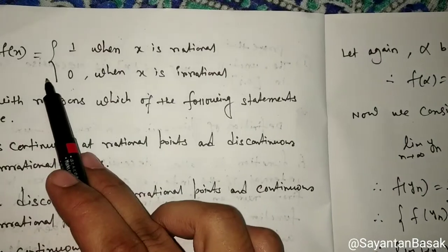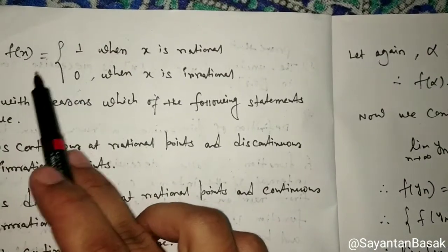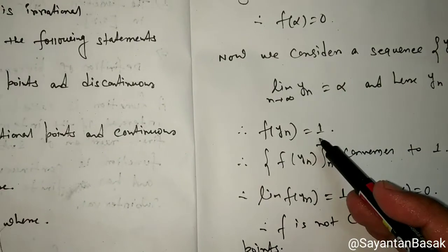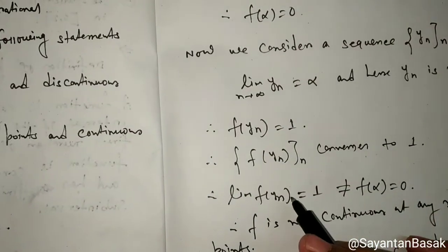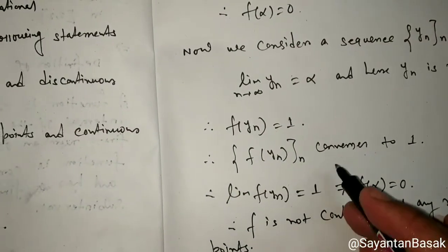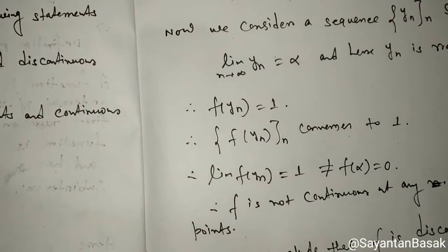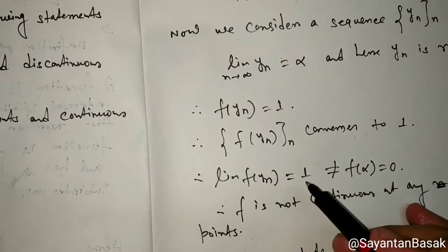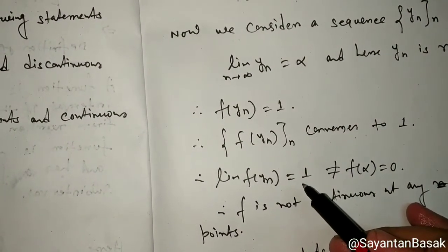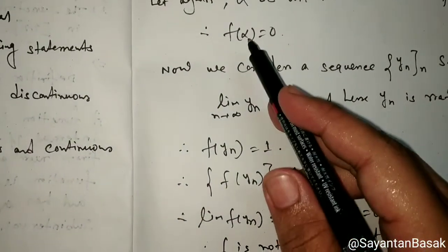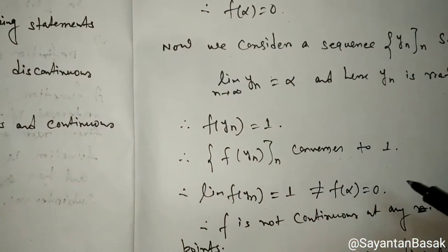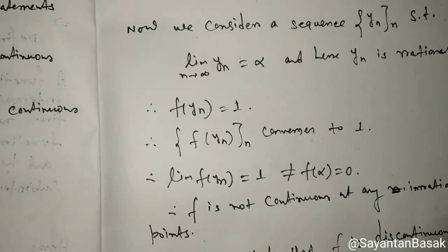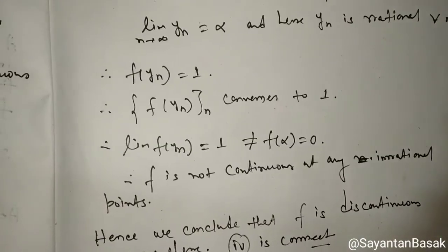By the given condition, f(y_n) equals 1 for all n. So f(y_n) converges to 1. But the limit of f(y_n) equals 1, which is not equal to f(alpha) equals 0. Therefore, f is not continuous at any irrational point.